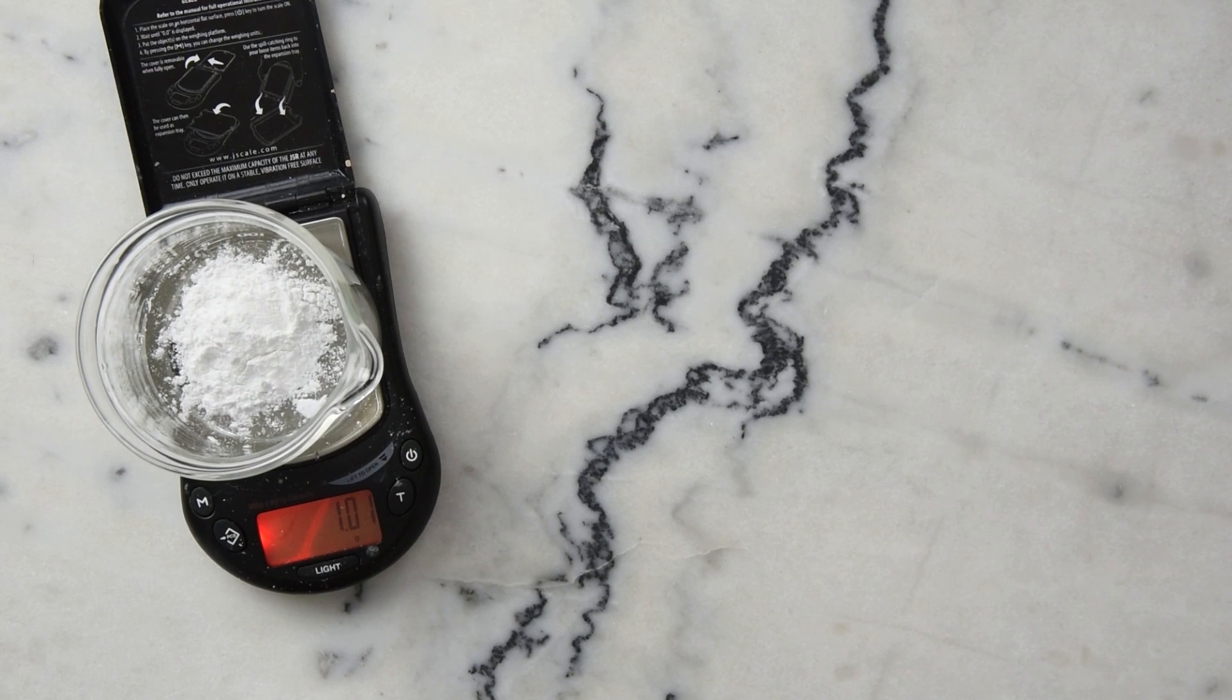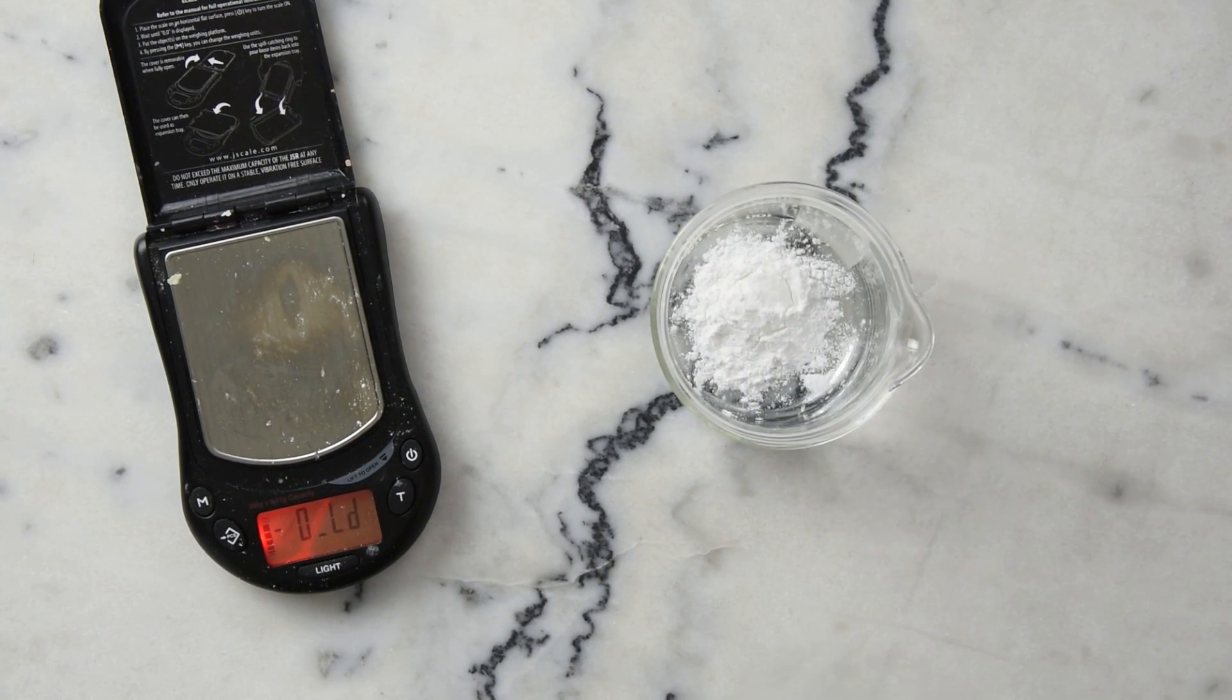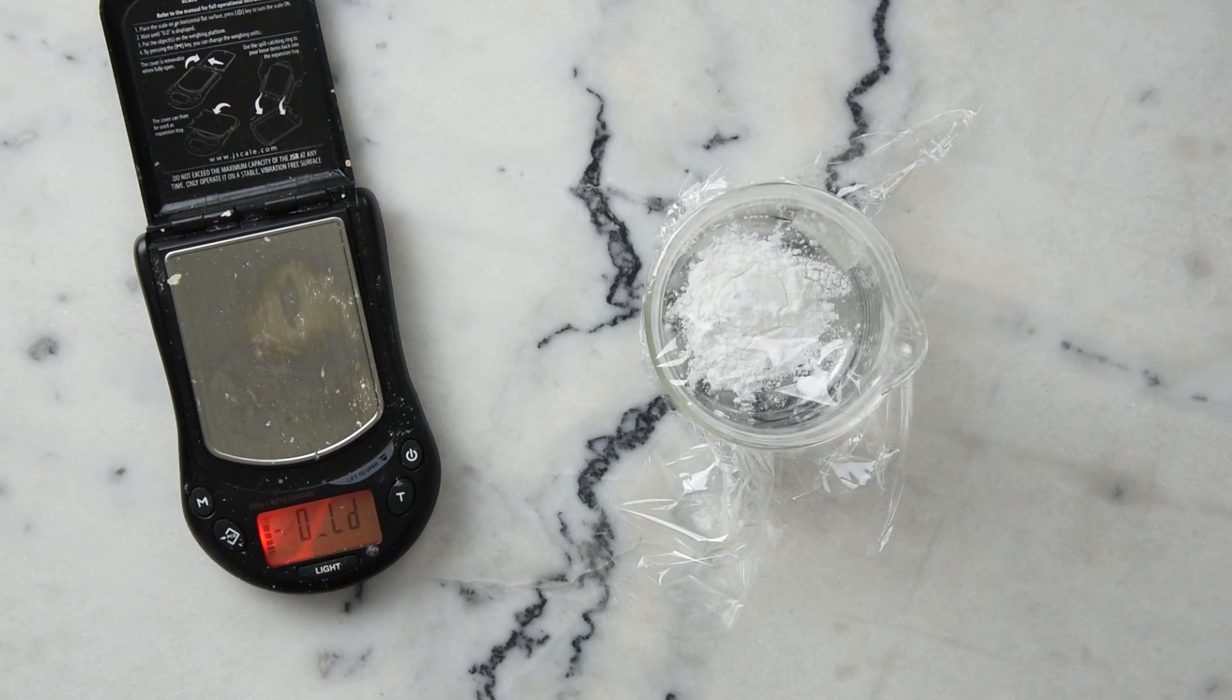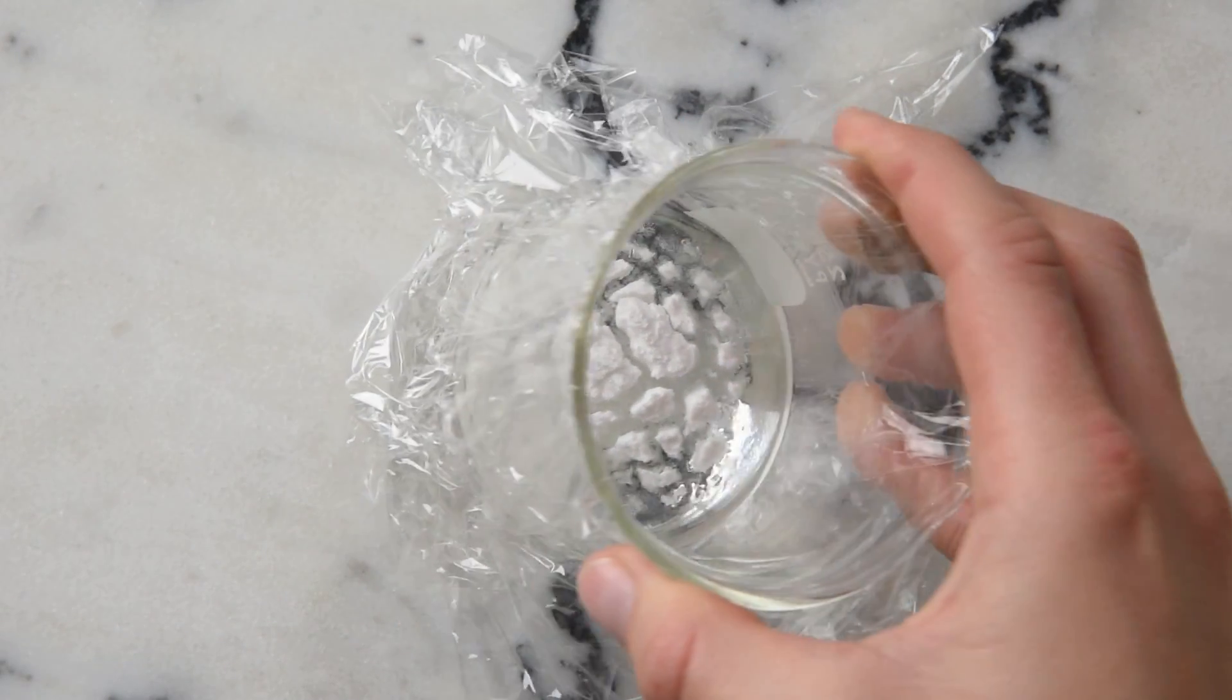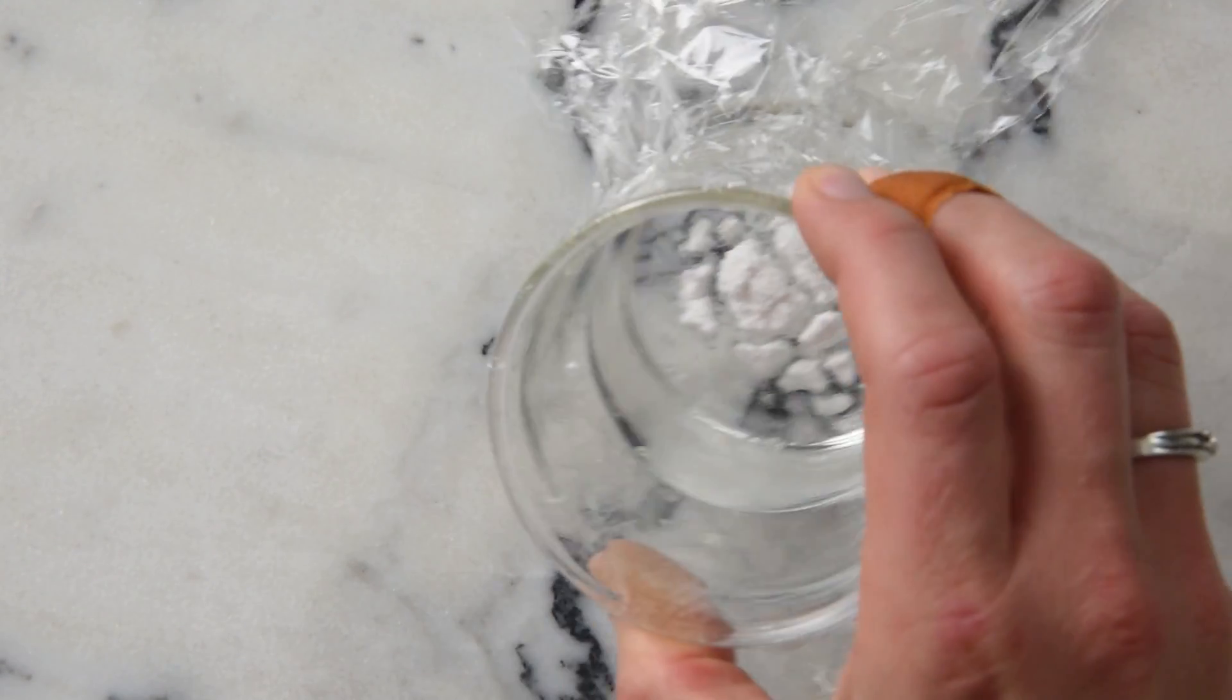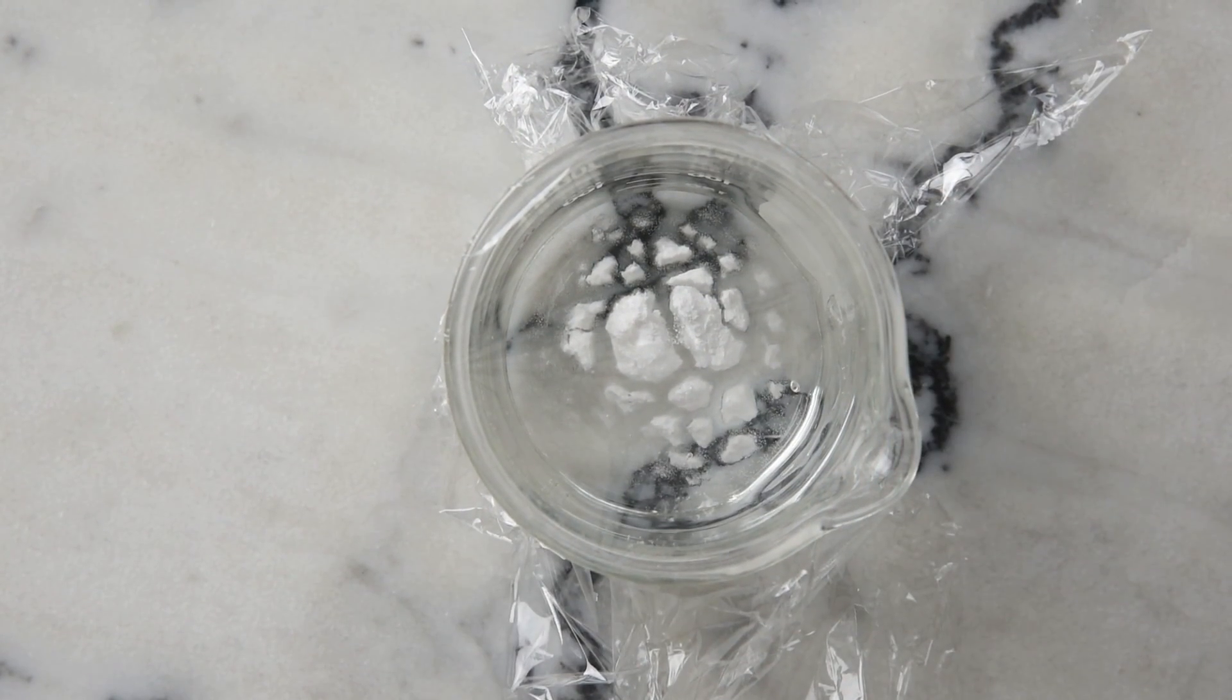Now the hard part is resisting the urge to stir it. We're just going to cover it with cling film and leave it to hydrate on its own. It's been about an hour and a half, and you can see it's started to hydrate. When I tip it, there's this blob on the top that's much thicker and more solid and gelatinous than the underlying water, but it definitely still has some soaking to do.